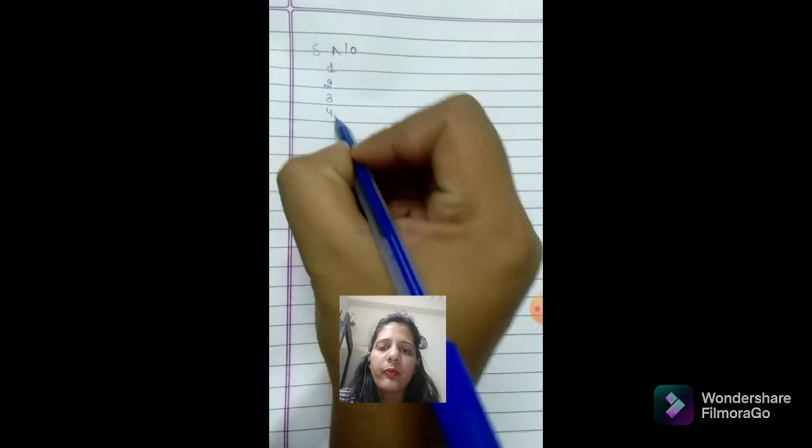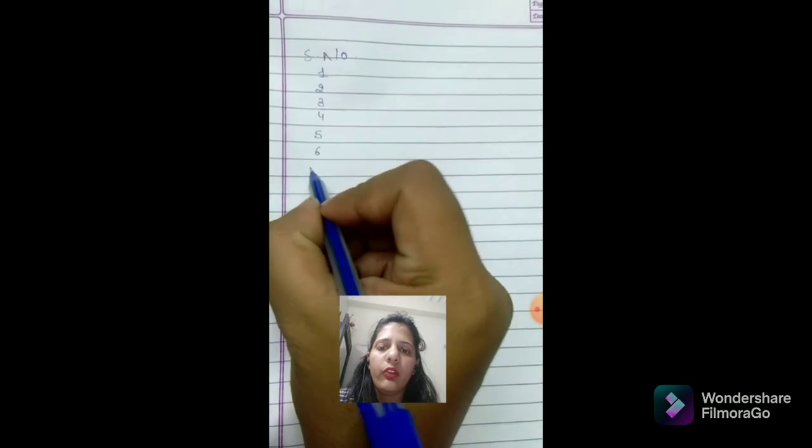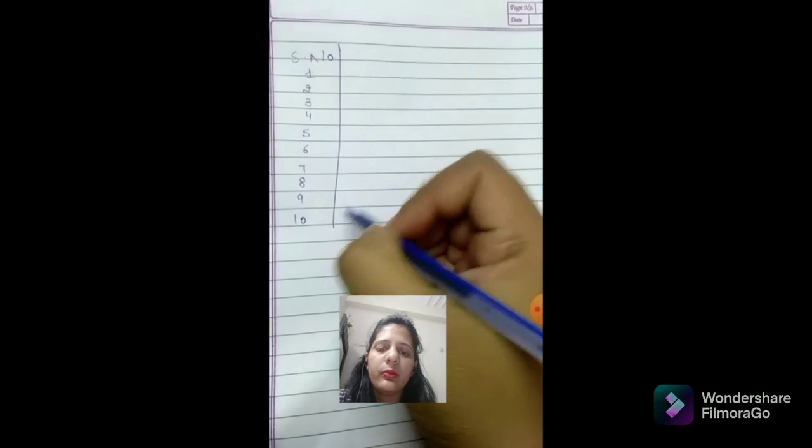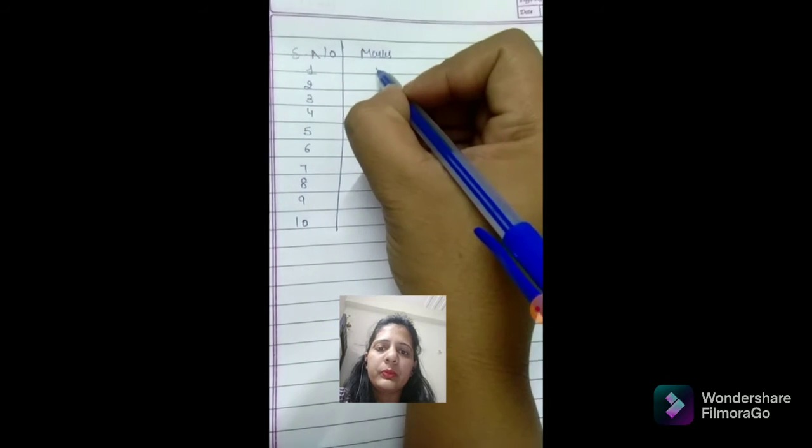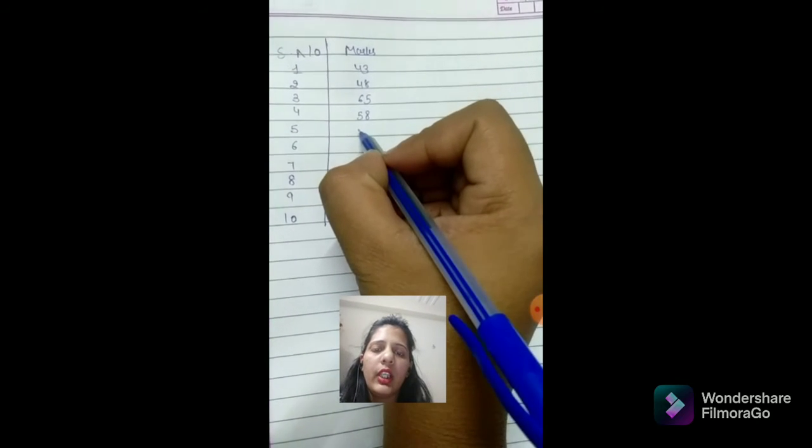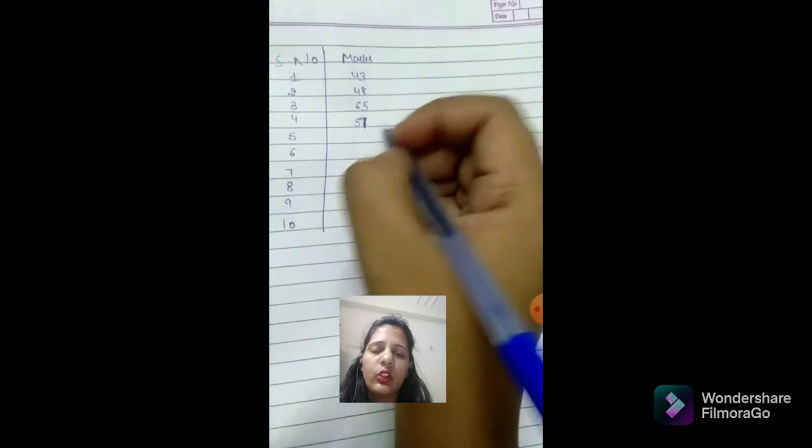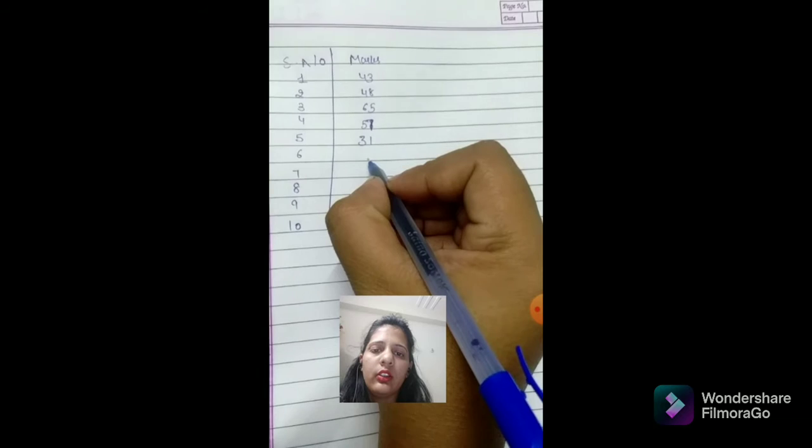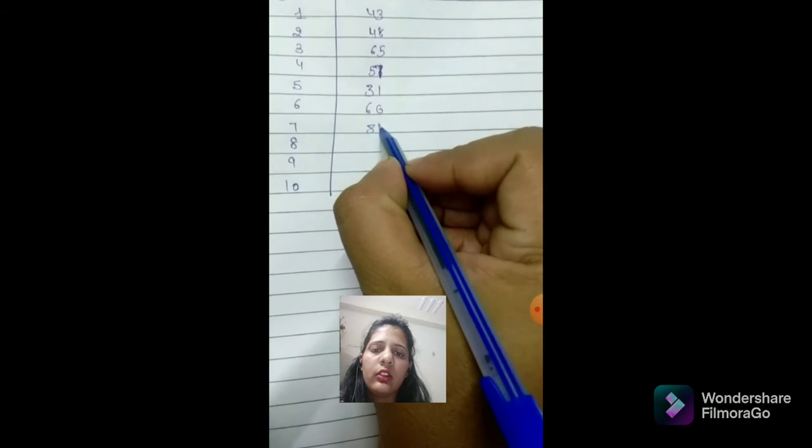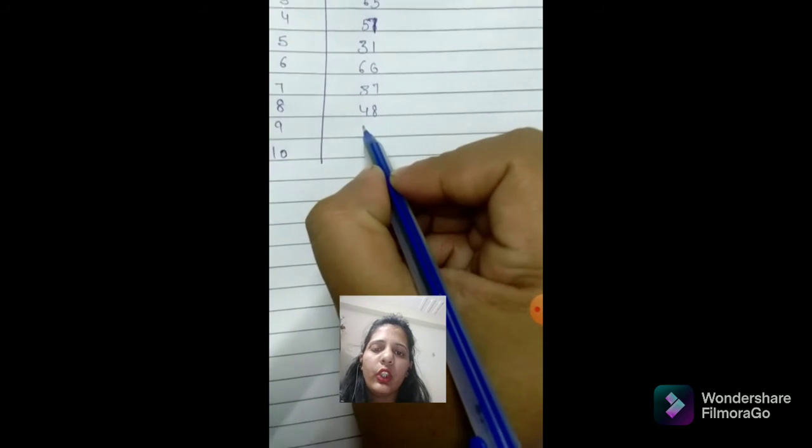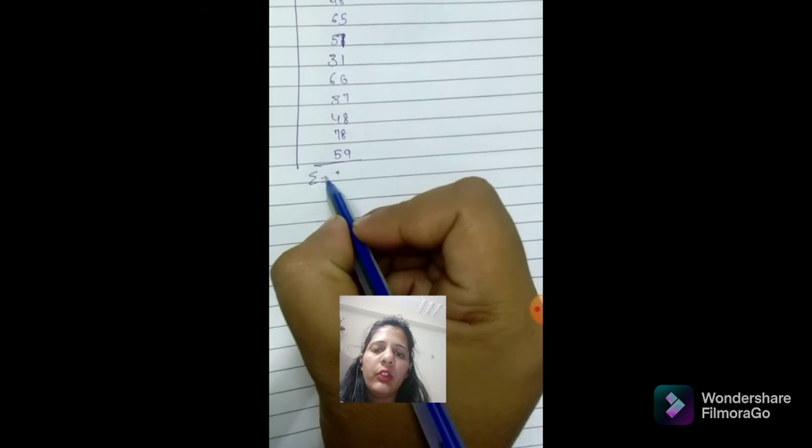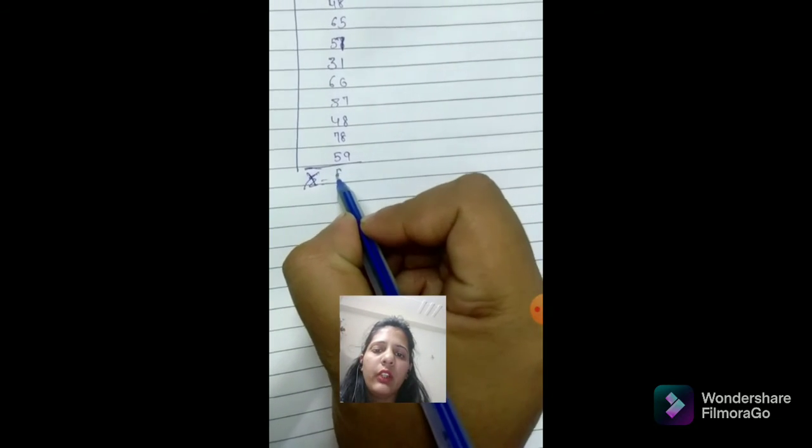is given 1, 2, 3, 4, 5, 6, 7, 8, 9, and 10. Marks are given: 43, 48, 65, 57, 31, 60, 37, 48, 78, and 59. So sum of these will be 526. Sum of x is 526.